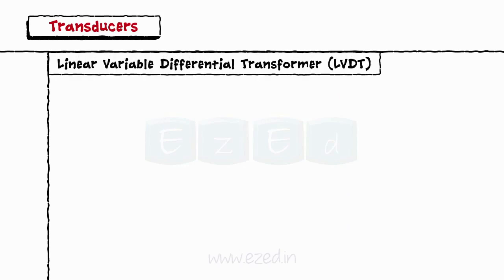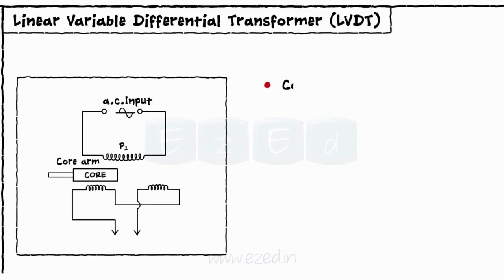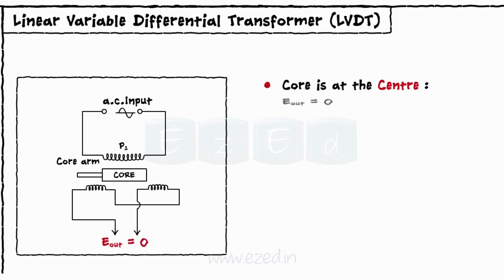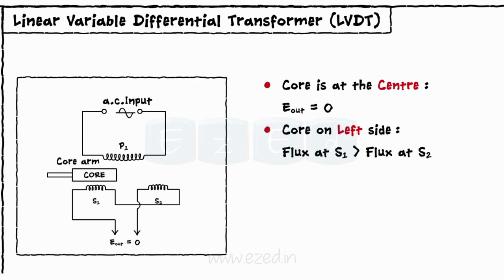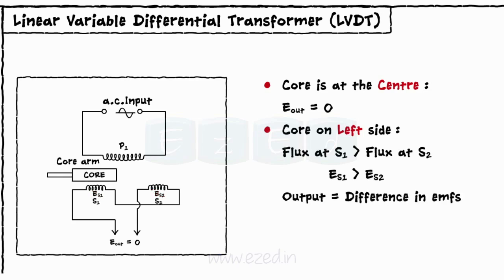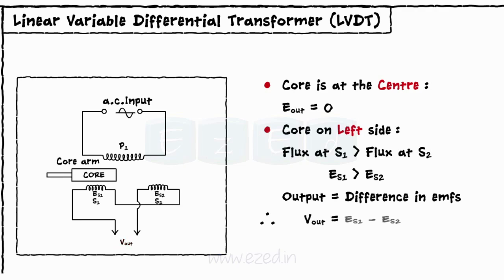Working of LVDT is as follows. When the core is at the central position, the EMF induced is zero. When the core shifts towards secondary winding S1 due to displacement, more magnetic flux gets linked to coil S1 than S2. As a result, the EMF induced in coil S1, ES1, is more than S2, ES2. The output is the difference between two EMF voltages. Hence, when the core moves towards coil S1, we get output as Vout equals ES1 minus ES2.